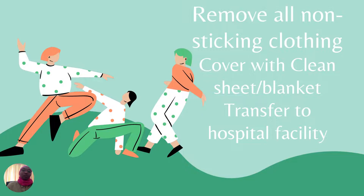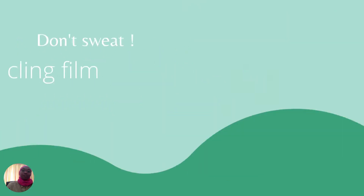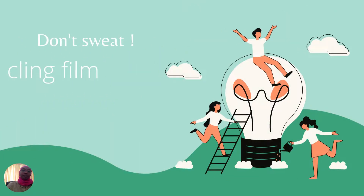Remove all non-sticky clothing from the patient. Cover the patient with a clean sheet or a blanket and immediately transport to a hospital facility. Don't worry — use whatever you have at home. For example, if you have cling film used for wrapping pastries or cakes, you can use that as a short-term dressing over the burn area. Just improvise as much as possible and then send the person immediately to a hospital facility.